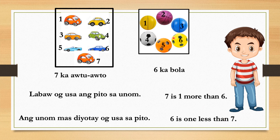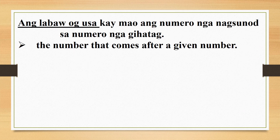If you look at the picture, you will understand. For example, there are 6 balls and 7 toy cars. The balls are fewer — 6 is one less than 7. So mas jutay ang ginaghanon sa mga bola. Ang 6 kabola, mas jutay o gusa sa pito ka-auto-auto. Or 6 is one less than 7. So ang labaw o gusa is the number that comes after a given number.